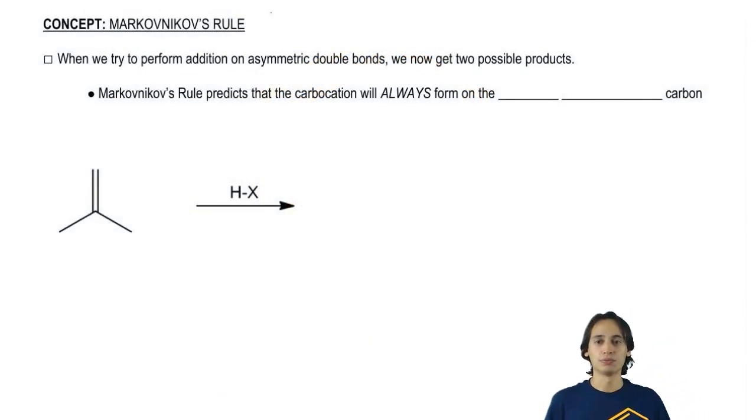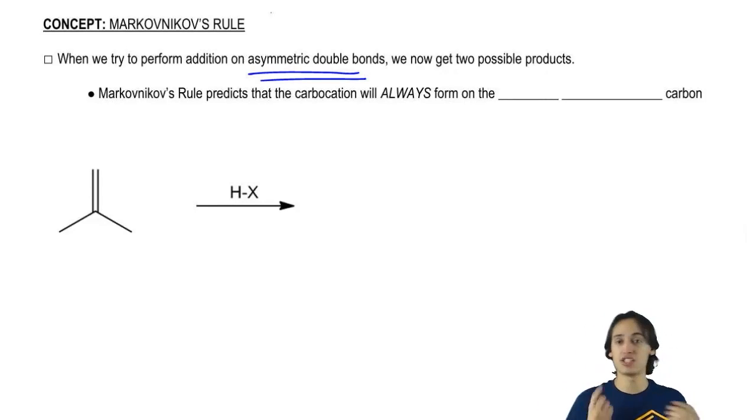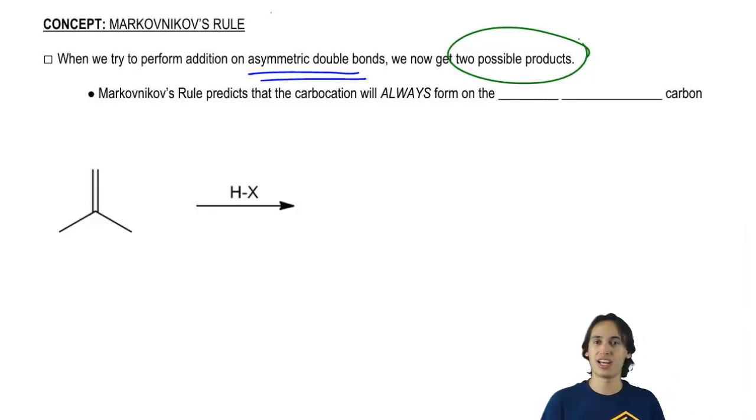So Markovnikov's rule is basically going to be the rule that we use to figure out addition for asymmetric double bonds, which like I said, is actually the majority of the double bonds that we're going to deal with. Whenever you do have asymmetric double bonds, you're going to get the possibility of forming two different products because now you could add to one side or you could add to the other.